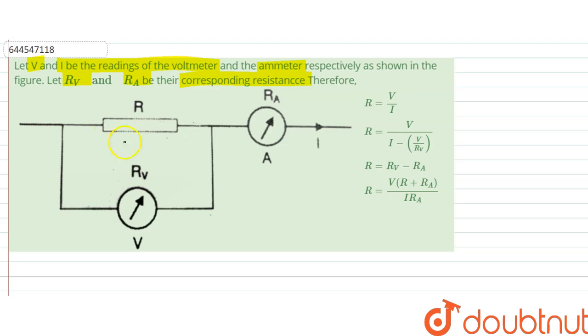So from the diagram itself, what we can see is R and R_V are in parallel situation. So the equivalent resistance of these two...